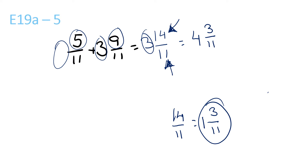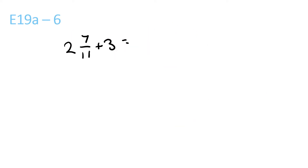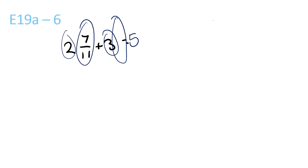Soon you'll easily be able to do this step in your head. Next question. 3 plus 2 is 5. 7 over 11 — there's no fraction over here to plus. So you just move the 7 over 11 over here to make it equal 5 and 7 over 11.